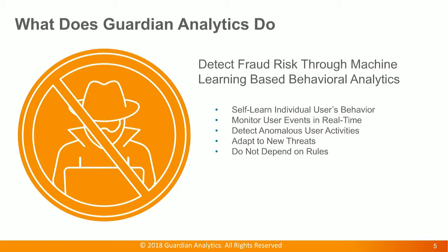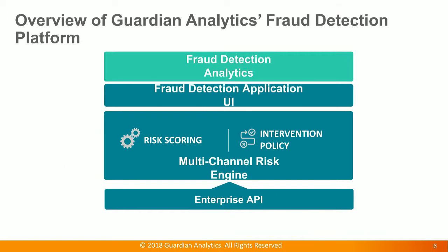The algorithm we use allows us to adapt to new threats without relying on rules. Before we deep dive into fraud detection analytics and its capabilities, I'd like to give everyone a quick overview of Guardian Analytics' fraud detection platform. At the bottom, we have an enterprise API layer that allows us to ingest data from digital banking and payment platforms in real time. On top of the API layer sits our multi-channel risk engine that processes the data and evaluates fraud risks. Then we have the application UI that supports the fraud operation team's workflow from alert monitoring to disposition to case management. And finally, the fraud detection analytics makes all user and transaction events and attributes with their enriched risk information available to meet the customer's analytical needs.